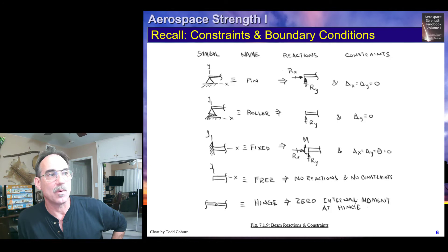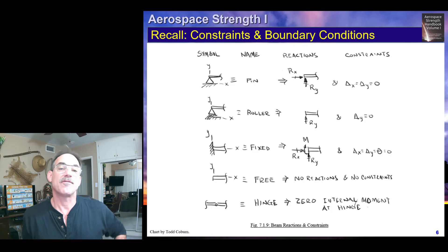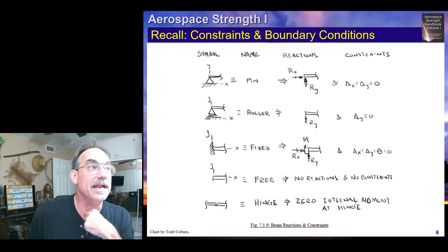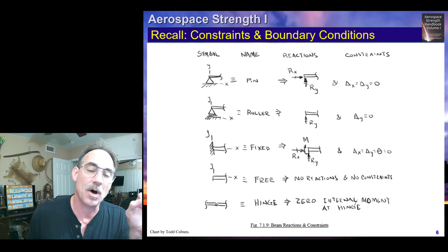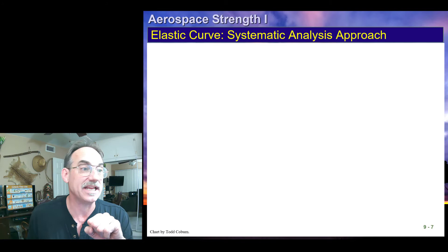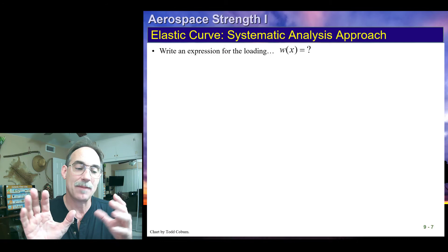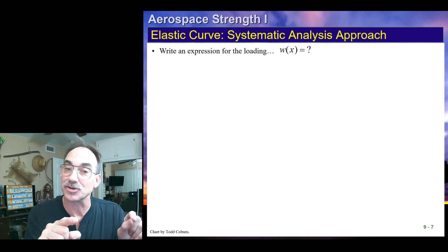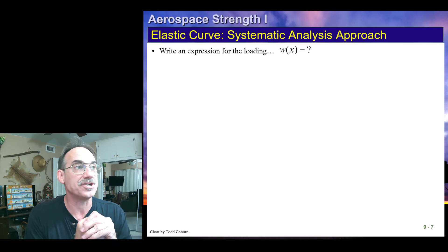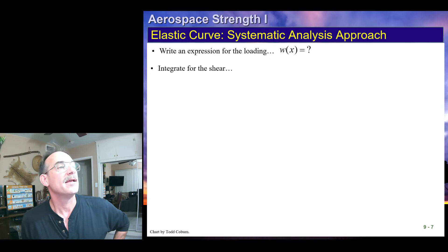You need to recall how to use the constraints. For a pin, the two deflections will be zero. For a roller, one deflection will be zero. For a fixed support, the deflection and slope are both equal to zero. Free has no constraints, and a hinge means the moment is zero. You'll need to remember these boundary conditions because we need to take advantage of them when solving for our constants of integration, C1 and C2. So, let's take a systematic analysis approach. Our first step will be to write our loading function — the best way to do that is with singularity functions. Go back to lecture 12C where we cover singularity functions. Write your loading function as one function for the entire beam.